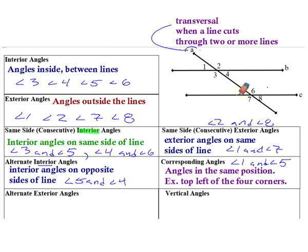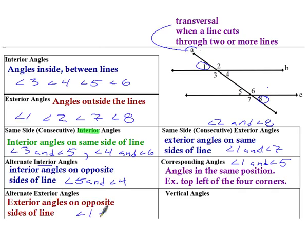Alternate exterior angles — again, 'alternate' means switching sides, but now we're exterior. So that would be angles like 1 and 8, because they're both exterior angles but on alternating sides of the transversal.